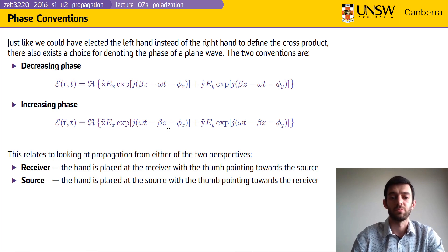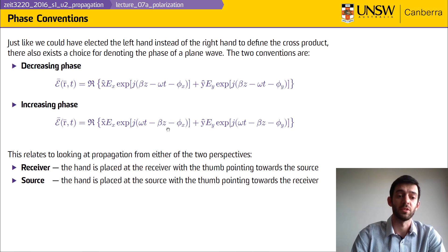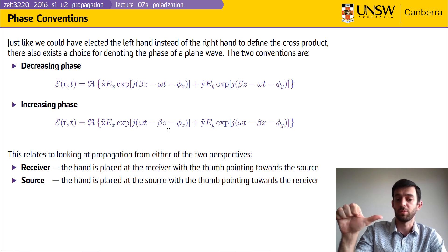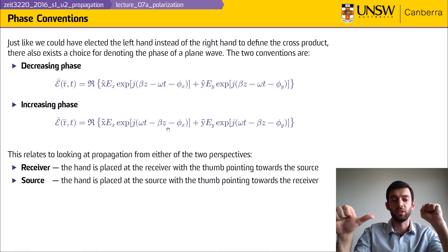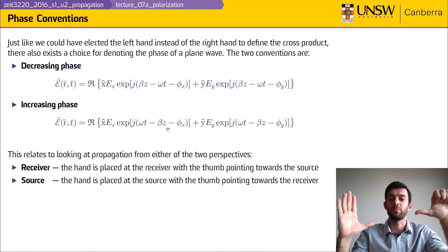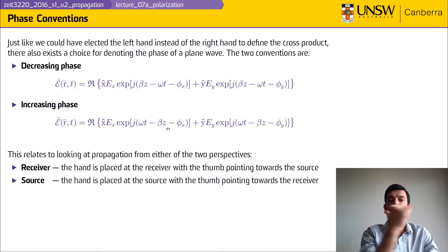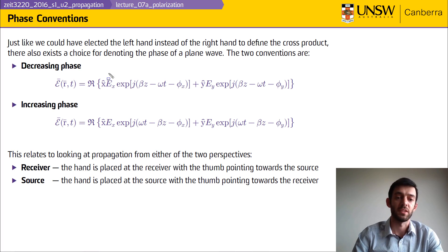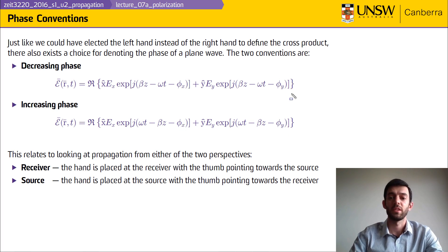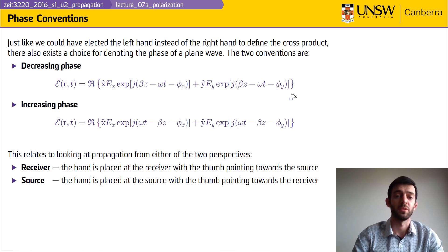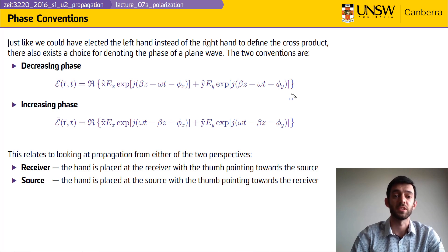This relates to looking at propagation from either of two perspectives. We can either look from the receiver — a detector — in which case you place your hand at the detector and point your thumb towards the source. Or you can do the opposite and look at the source and place your hand there with the thumb towards the receiver. Both scenarios have propagation along the direction, and in both we use our right hand, so as you can see that will switch many other things in terms of the components φx and φy. Although this might not seem very important when performing calculations, it is very important that when you look up reference material you know which convention they use, because it will influence the transformations we will see later on.